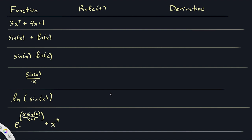Now I want to do a similar exercise, but instead of functions where you can just look and find the derivative, I want to look at functions where you might have to decide on the rule to use. The functions I've chosen are here on the left — this is a good time to pause for a minute and see if you can identify not the derivative right away, but at least the rules you'll need to use. Go through all of these and figure out which rule or rules you'll need.